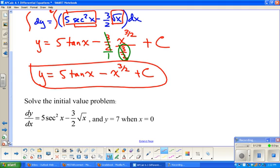Substituting in. I have 7 for y equals 5 times the tangent of zero minus zero to the three halves plus c. Well, tangent of zero, the slope at a zero degree angle, actually happens to be zero.